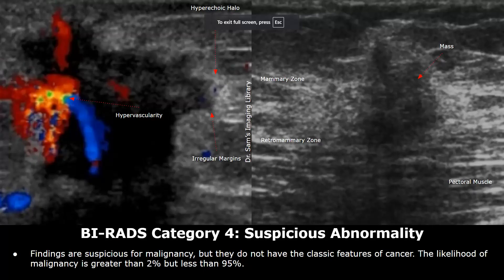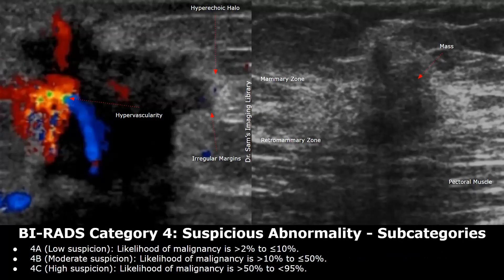BI-RADS 4 category is called suspicious abnormality. Findings are suspicious for malignancy but they do not have the classic features of cancer. The likelihood of malignancy is greater than 2% but less than 95%. BI-RADS 4 is further subdivided as 4a, 4b, and 4c.